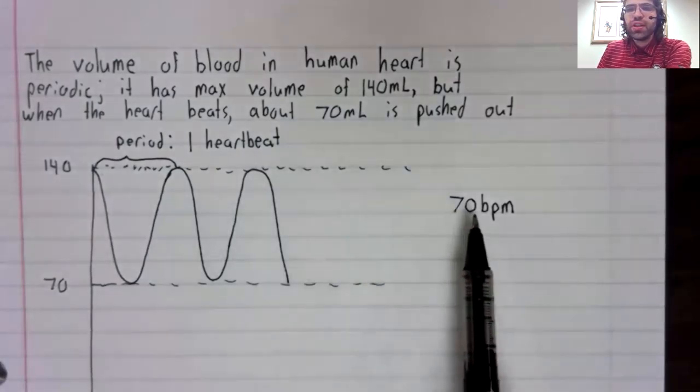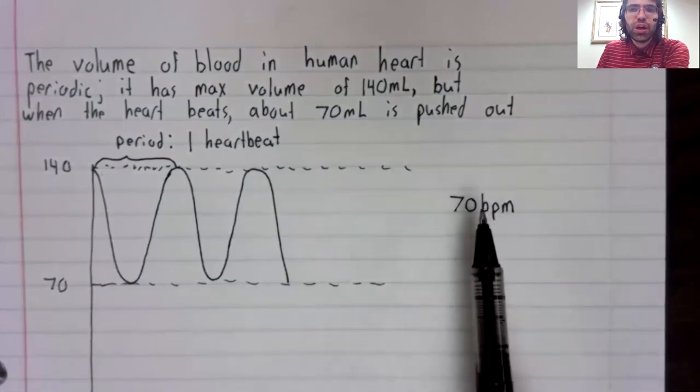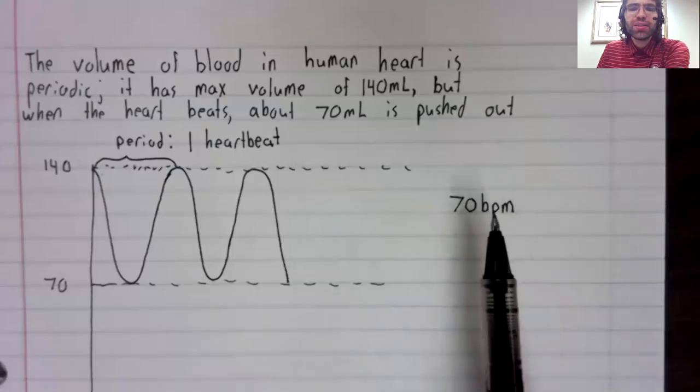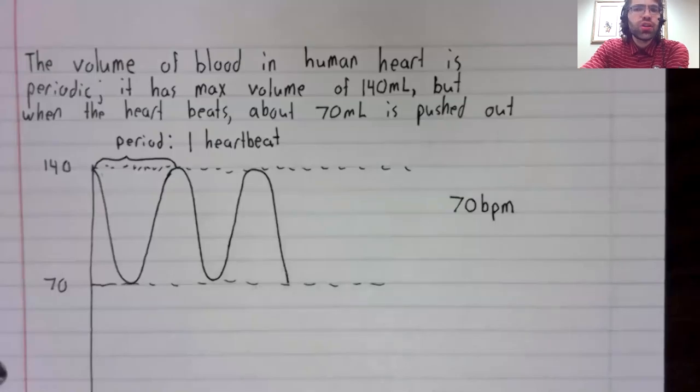This 70 is a number describing the periodic function. But what is 70? It's not the period. It's not the amplitude. It's not the phase shift. And it's not the vertical shift. It's something else called the frequency.